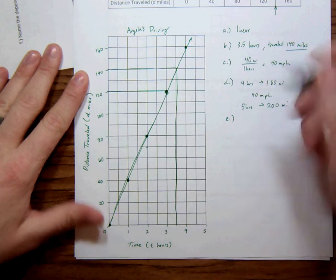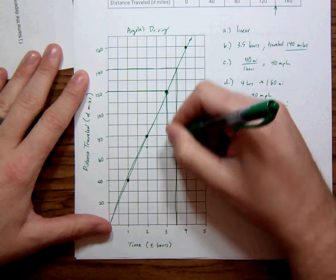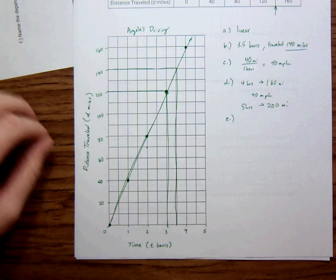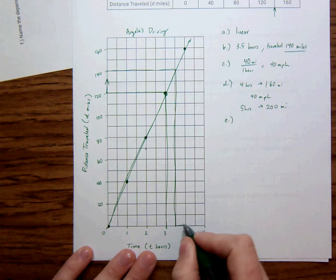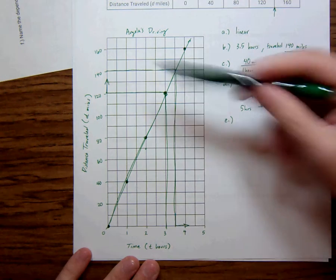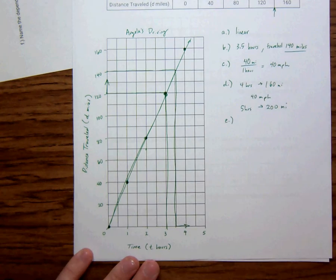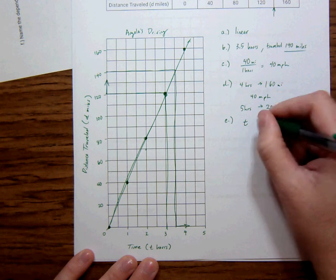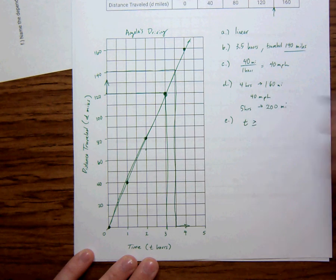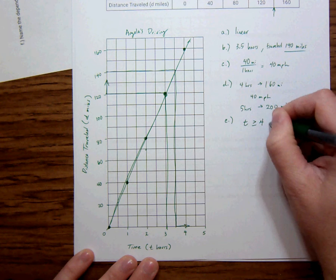If she wants to go at least 120 miles, she needs to go at least 3 hours. If she wants to go more, she'd have to go more this way. So if she wants to go more miles, she has to go more hours. So we're going to say she would be on the road T greater than or equal to 4 hours.